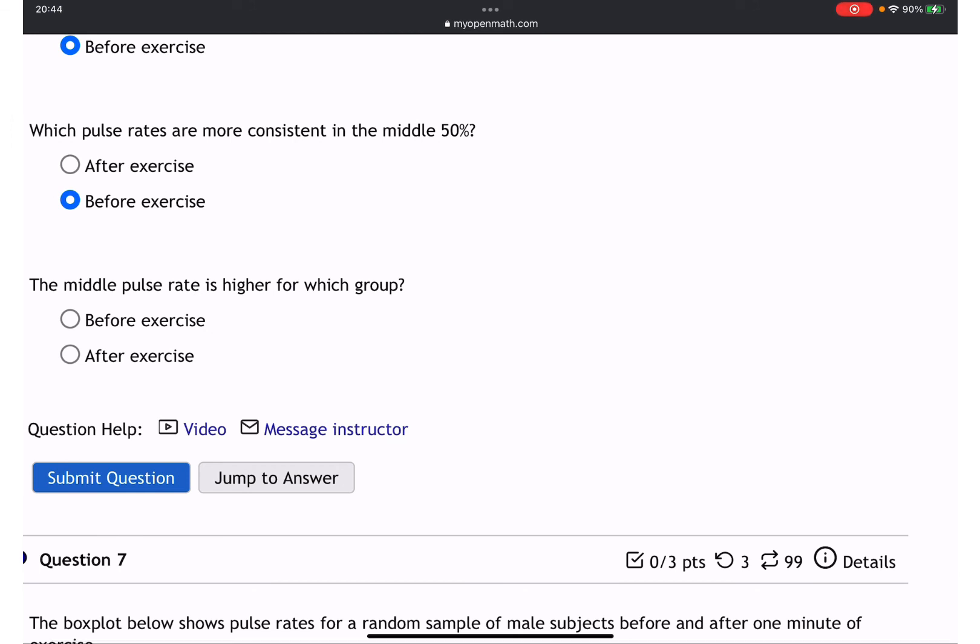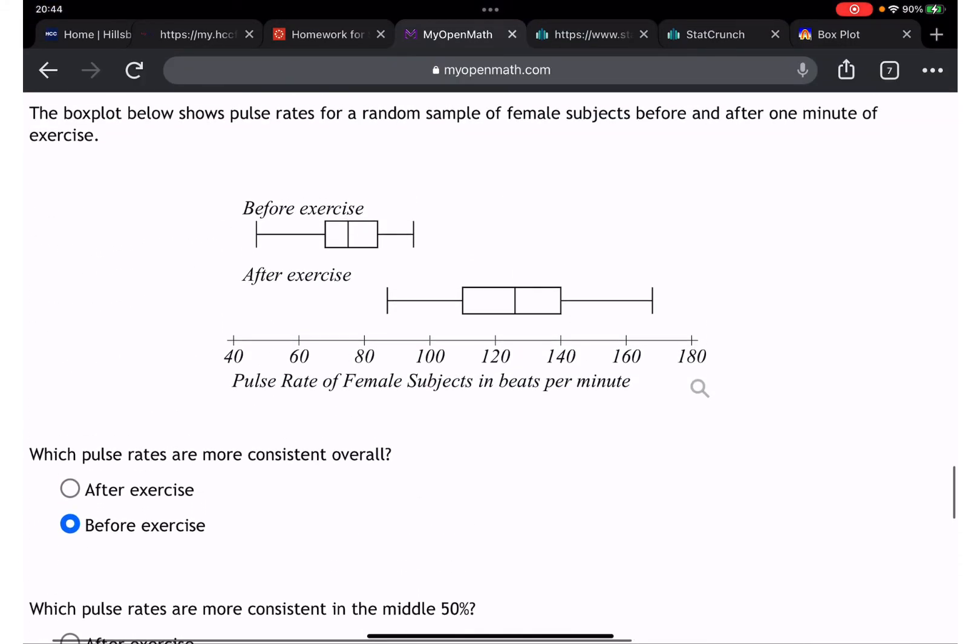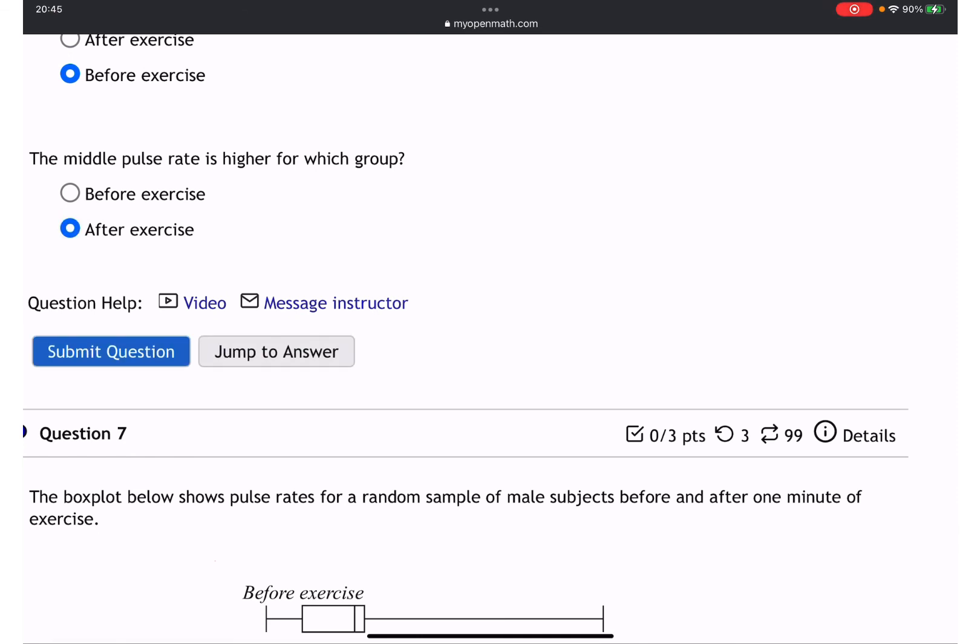Next one: which pulse rate are more consistent in the middle 50%? When we are looking, the most consistent is going to be before because it's less stretched, right?